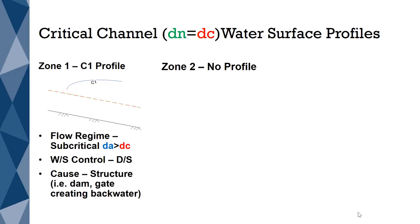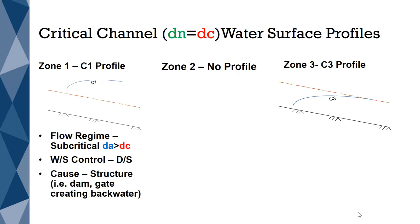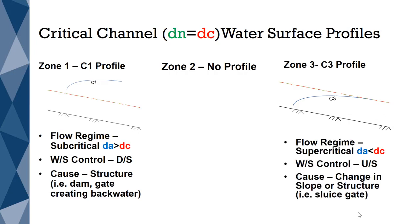There is no Zone 2 in critical channels because the normal depth equals the critical depth. A C3 profile is formed in Zone 3, when the flow regime is supercritical. Channels that are supercritical occur when the actual depth is less than the critical depth. Flows that are supercritical are always controlled upstream. For a C3 profile to occur, there needs to be something upstream causing the water surface to be below critical. This will occur when there is a slope change or a sluice gate.